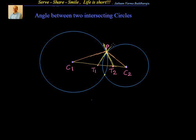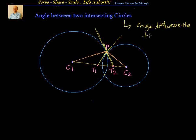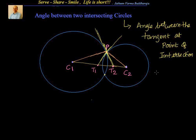One line is going in one direction and the other line is going in another direction. We have two tangents and those two tangents are intersecting at point P, or these two circles are intersecting at point P. At that point, if you draw the tangents, the angle between them — the angle between two intersecting circles — is the angle between the tangents at the point of intersection. In this figure it is nothing but angle T1PT2; we just take it as theta.